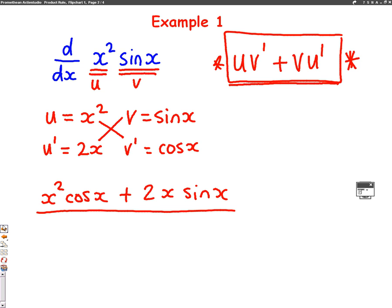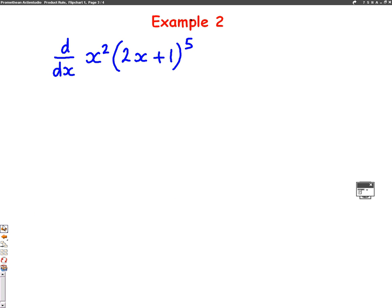Let's have a go at another example. Example two, I want to differentiate x squared 2x plus 1 to the power of 5. I can use the product rule because I have two things multiplied together. I have an x squared and I have a 2x plus 1 to the power of 5.